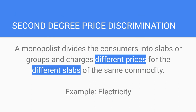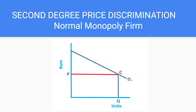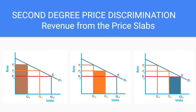Now let's take a look at second degree price discrimination. Here, a monopolist divides consumers into slabs or groups and charges different prices for the different slabs of the same commodity. A good example is electricity charged based on the slab rates of kilowatts consumed. In the diagram, D1 is the demand curve for electricity, C represents the cost of production, and Q is the total energy generated — determined where marginal cost equals marginal revenue. Till the consumption of Q1 units, the price per unit is P1. For Q1 to Q2 units consumed, price level is OP2, and from Q2 to Q3 the price is P3.